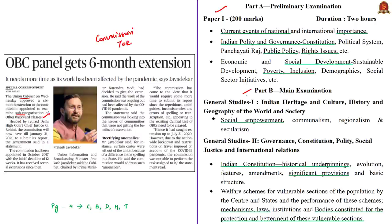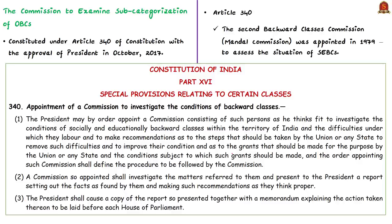The syllabus relevant to the analysis of this news article is given here for your reference. A commission to examine the sub-categorization of OBCs was constituted under Article 340 of the Indian Constitution with the approval of the President in October 2017. Article 340 provides for the appointment of a commission to investigate the conditions of backward classes.